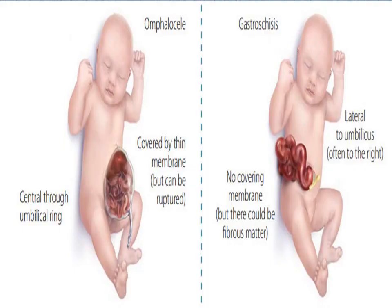Here is a picture to highlight the differences between the two. In omphalocele, the gut is sealed within the umbilical cord — we can see the remnants of the umbilical cord. Meanwhile, in gastroschisis, the bowel is not covered by anything.